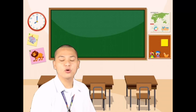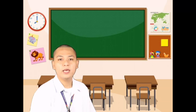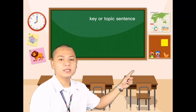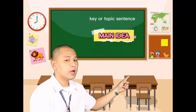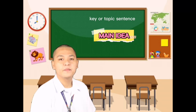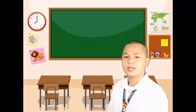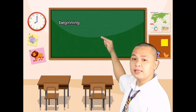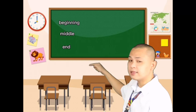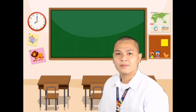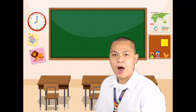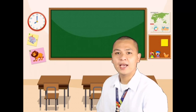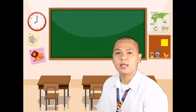In a paragraph or selection, there is usually a key sentence or topic sentence that gives the main idea of the paragraph. This key sentence may either be at the beginning, at the middle, or at the end. Now that you know how to identify the main idea, the key sentence, and supporting details in a particular reading selection, let's answer this activity.